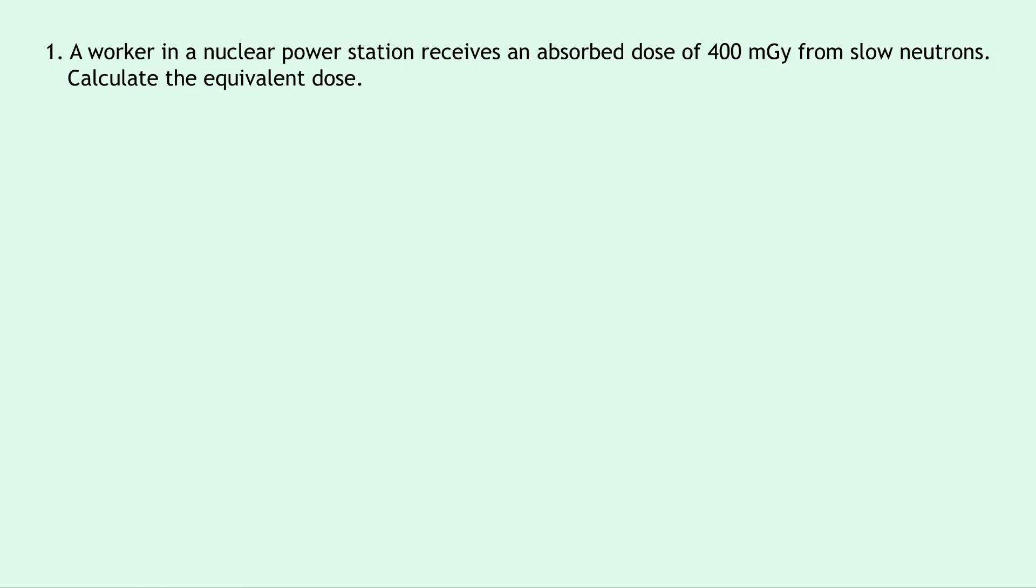While writing down what we know from the question, we're trying to find H. We know the absorbed dose D is 400 milligrays but we have to convert that into grays first. So this becomes 400 times 10 to the minus 3 grays. And we're also told in the question that we're dealing with slow neutrons.